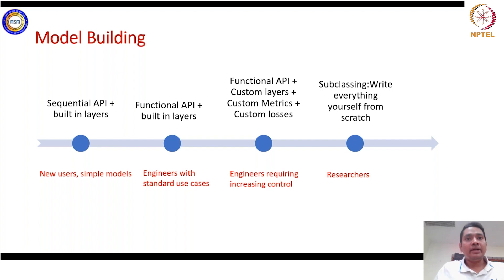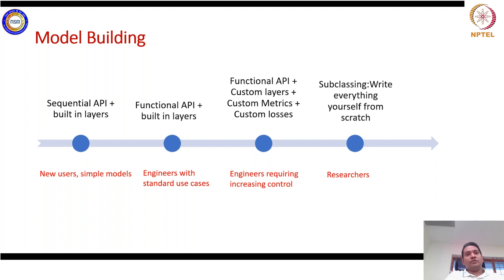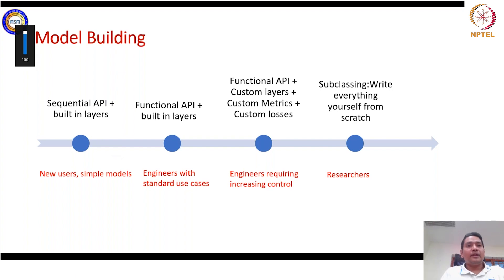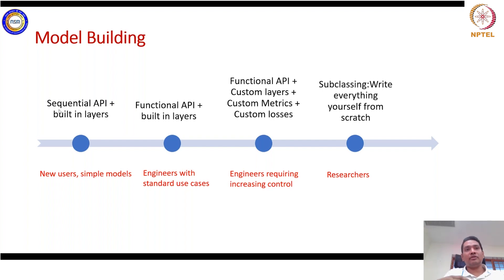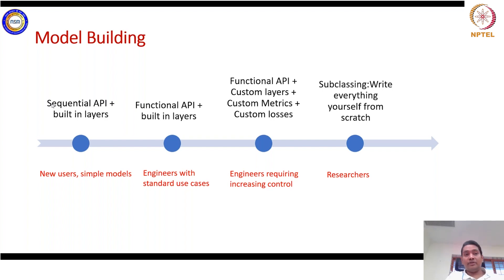Now we come to model building. As mentioned, TensorFlow 2 gives options from beginners to experts. For beginners defining simple models, it is very easy to use the Sequential API. Several APIs are available to provide increasing flexibility and control. The Sequential API has all the built-in layers that you can reuse and define for simple models.